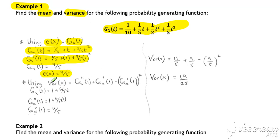Similarly for the variance, you can use your quotable result for the variance. So we need to differentiate our probability generating function a second time, get our second derivative g''(t), substitute one in. The g''(1) is equal to 11/5.